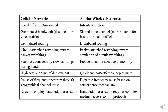Cellular networks have high cost and time of deployment, whereas ad hoc networks are cost-effective and easy to deploy. Ad hoc networks allow reuse of the frequency spectrum through geographical channel use and dynamic frequency reuse based on carrier sense mechanism. However, bandwidth reservation in ad hoc requires a complex medium access control protocol.